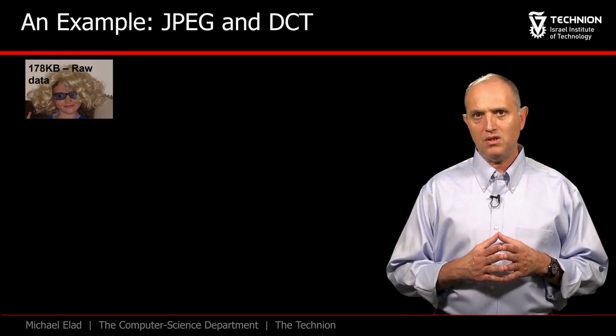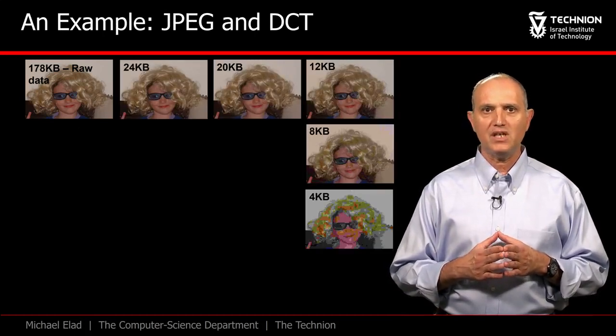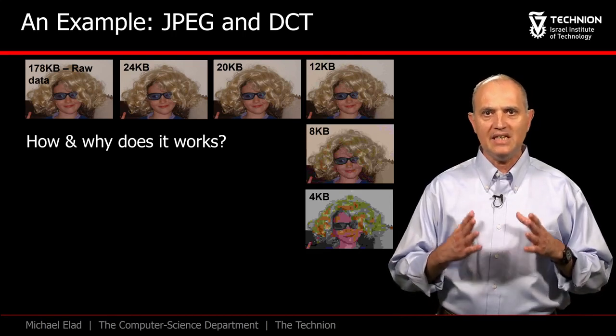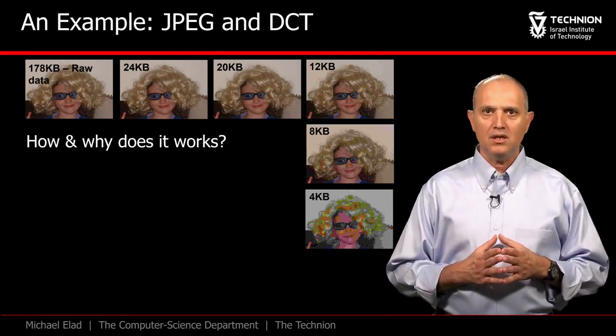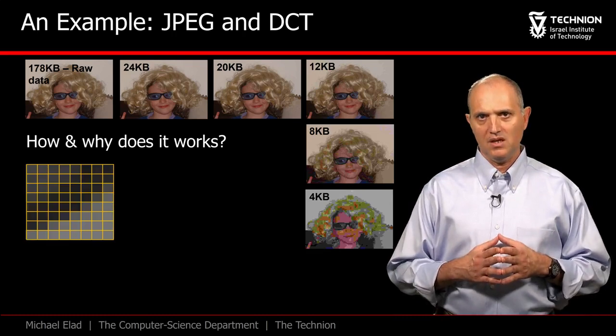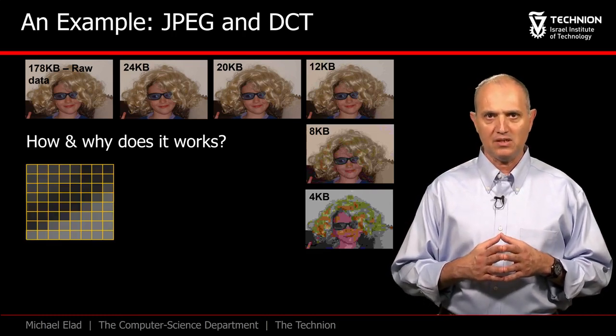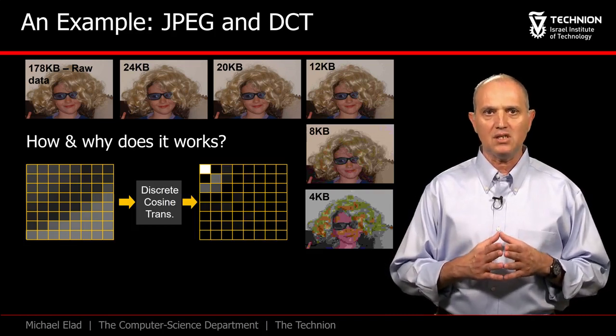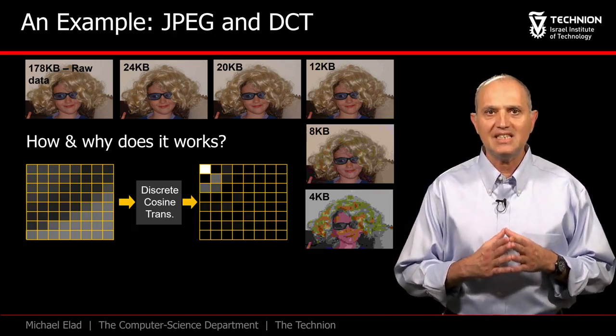As another example, consider the well-known JPEG algorithm for compressing natural images. Why does it work so well? What is its underlying model? Natural images are believed to follow the following rule. Given any small patch of pixels from such images, applying the discrete cosine transform on it results in a highly concentrated set of coefficients.